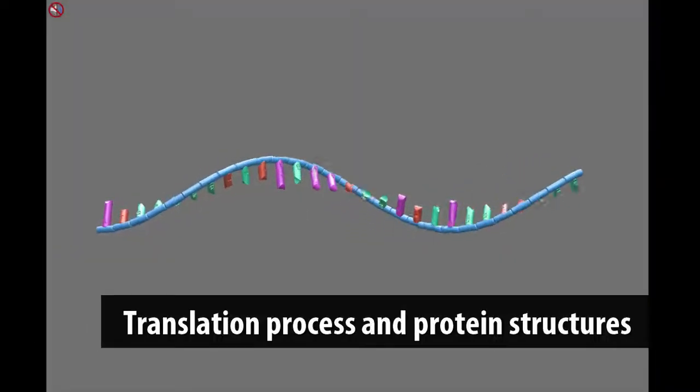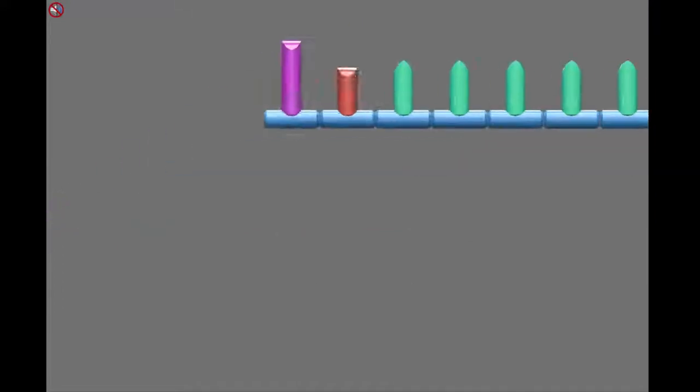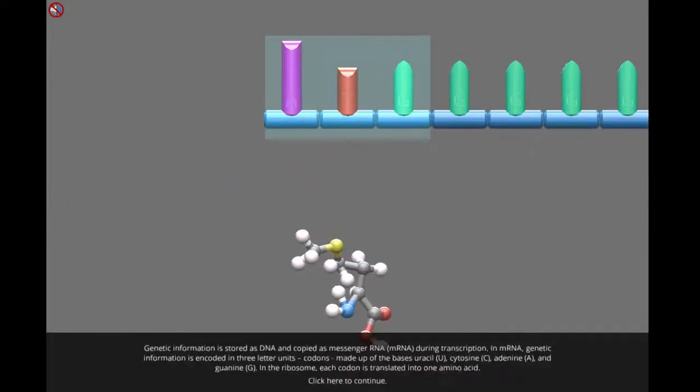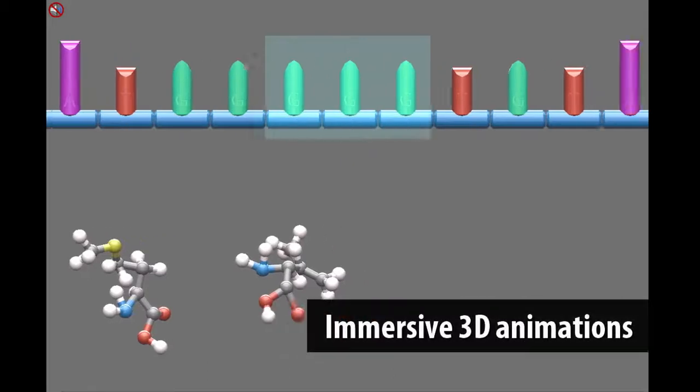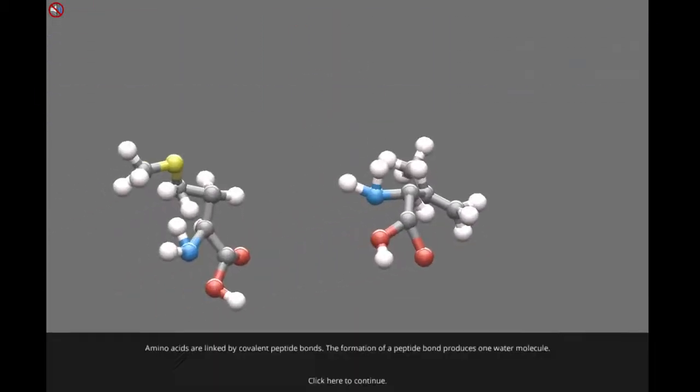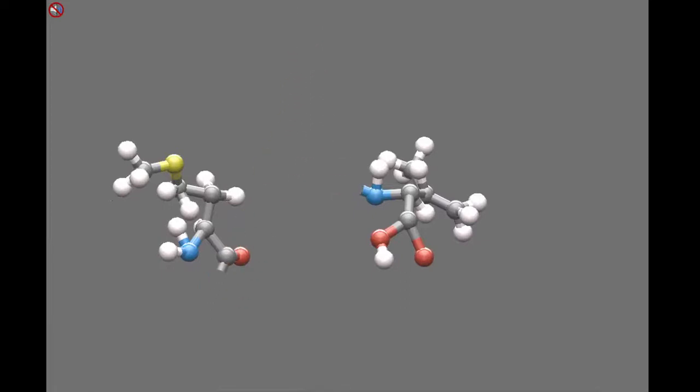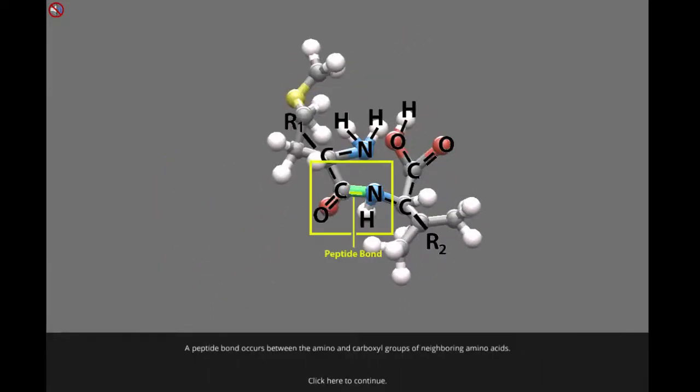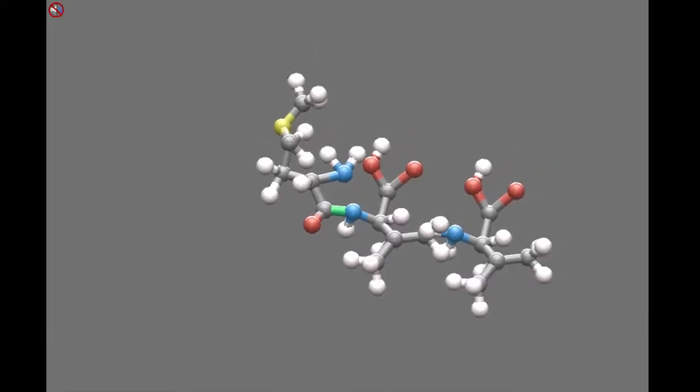Students will also learn about the translation process from mRNA to amino acids and how amino acids are assembled to proteins. A 3D animation is shown describing how triplets of codons are translated into amino acids, how these amino acids are joined together by peptide bonds creating a primary structure of protein.